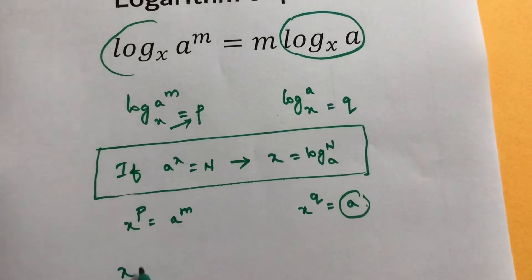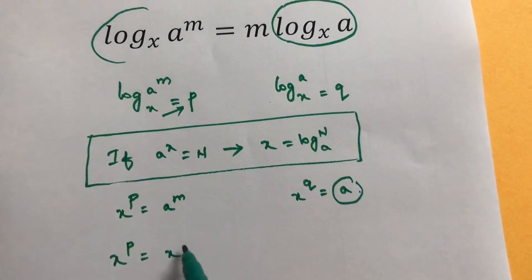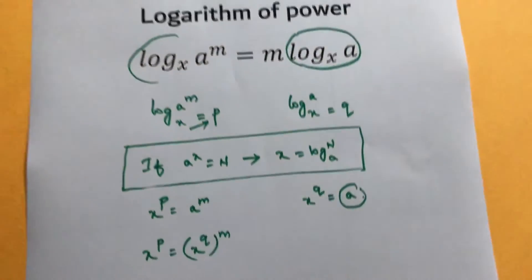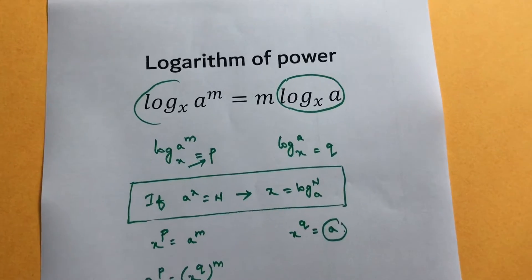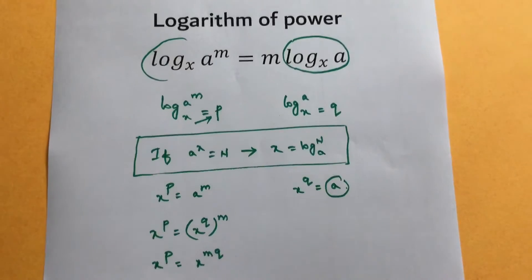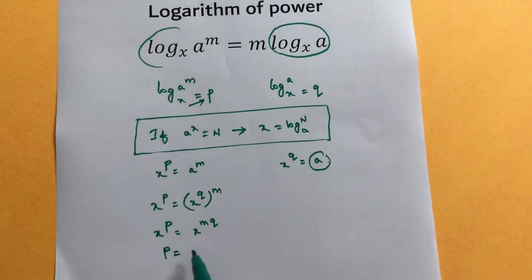x to the power p equals, in place of a substitute x to the power q, the whole to the power m. So x to the power p equals x to the power mq. Since the bases are equal, you can equate the powers: p equals mq.